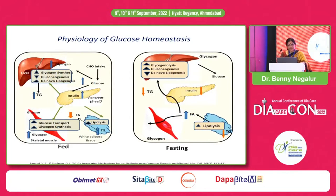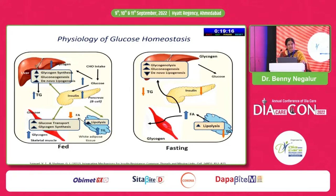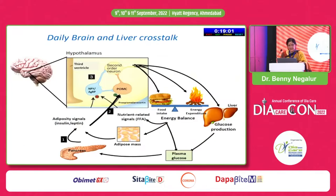Going back to liver and brain control of diabetes, let's first understand the normal physiology of glucose homeostasis as we have learned in medical school. Glucose is maintained tightly between the range of 80 to 120 by the action of two hormones — insulin and glucagon — which have effects on various tissues of the body and are regulated by the liver, which is the main regulator, and also by the brain.